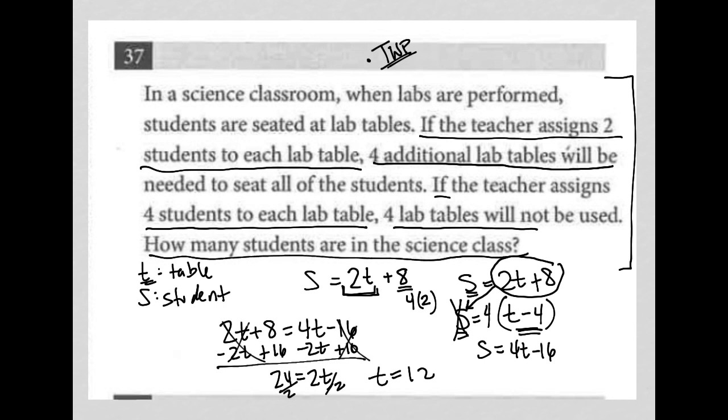Right. So T is tables. Let's not forget that. So students, I can use either one of these equations that I like. I'm going to start with the first one and just say, well, the number of students I have is equal to two times the number of tables, which is 12. 12 plus eight. Two times 12 is 24. Plus eight is equal to 32. So 32 is the answer here.